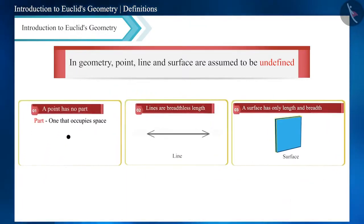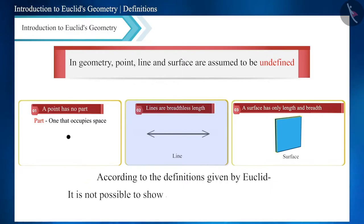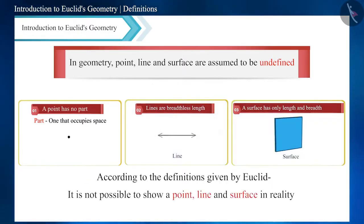according to the definitions given by Euclid, it is not possible to show a point, the breadth of a line, and the thickness of a surface in reality. Therefore, in geometry, point, line, and surface, that is plane, are assumed to be undefined.